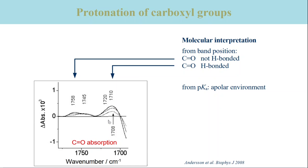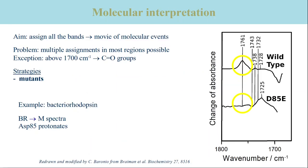Therefore, we turned to bacteriorhodopsin, where mutants were extensively used to elucidate the reaction mechanism of the protein. The use of point mutations has considerably contributed to our understanding of bacteriorhodopsin's difference spectra, and in consequence to the understanding of the molecular mechanism of this protein.